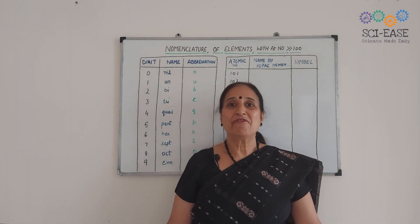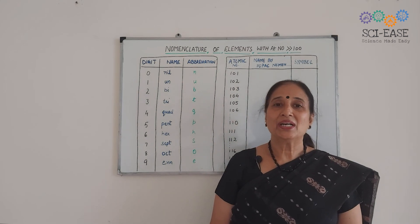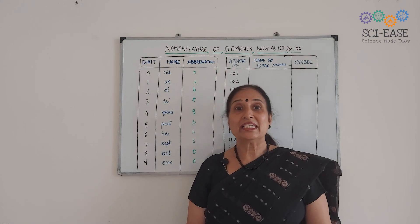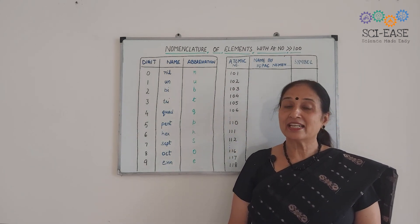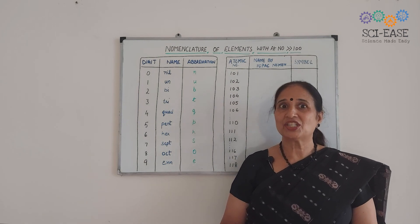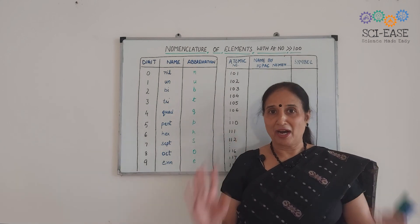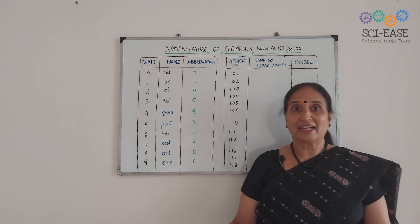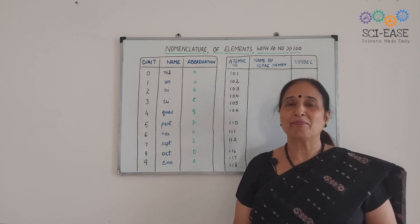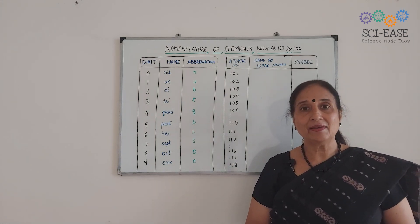Hello everyone, welcome to PsyEase. In this video, I'm going to take up the topic from lesson three of class 11 chemistry. This question usually comes in the paper for one mark, so each and every mark is important for us. You should know how to name the elements which have atomic number greater than 100.